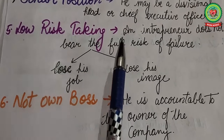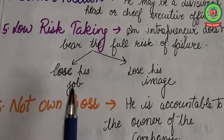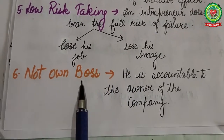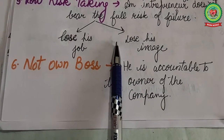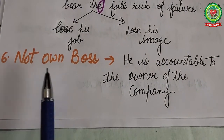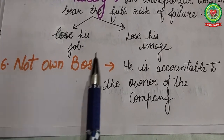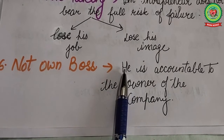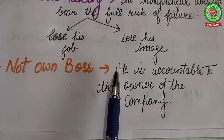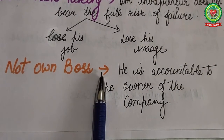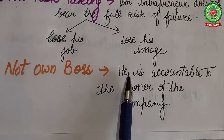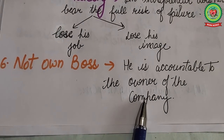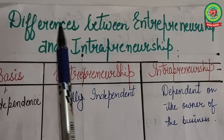Fifth is low risk taking — an intrapreneur does not bear the full risk of failure. They may lose their job or their image in the industry or organization. Sixth is not own boss — an intrapreneur is not their own boss in legal terms. They enjoy freedom and get the required resources and support, but are accountable to the owner of the company.